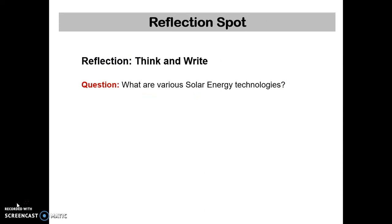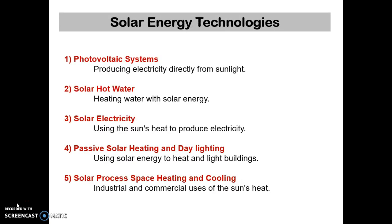Now let us think and write: what are the various sources of solar energy technologies? The answer is solar energy technologies include: photovoltaic systems producing electricity directly from sunlight; solar hot water, heating water with solar energy; solar electricity, using the sun's heat to produce electricity; passive solar heating and daylighting, using solar energy to heat and light buildings; and solar process space heating and cooling for industrial and commercial uses of the sun's heat.